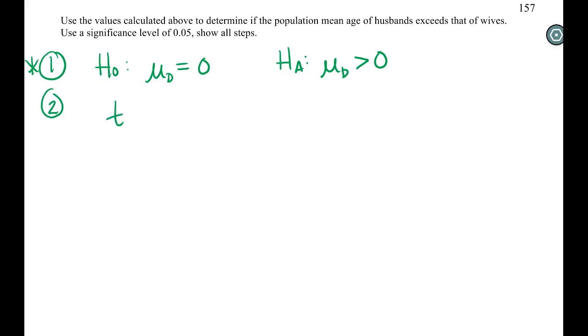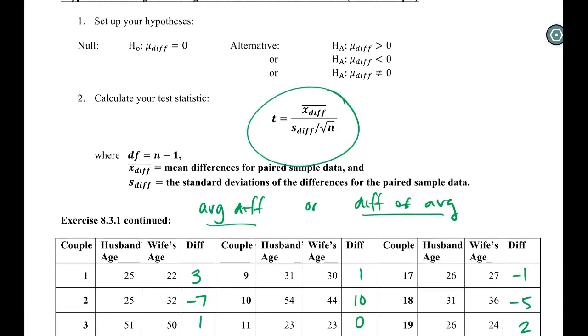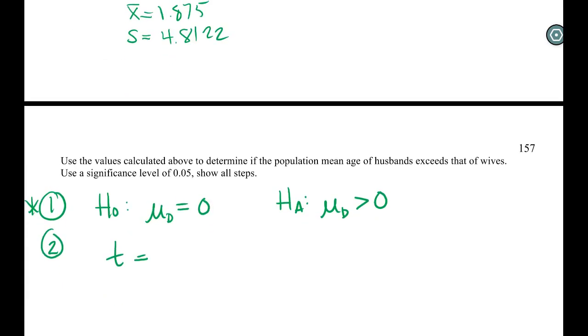So step two would be to go ahead and get our test statistic, which is still a T, because we don't have the true standard deviation difference between the two. We need to get a T. If we wanted to, we could use the actual formula here, our average difference. Notice that there's nothing subtracted here because we're assuming that the real average difference is zero, so we don't need to even write that there. It's just going to be this divided by our s divided by the square of n. So technically, this would be easy to calculate. This would be 1.875 divided by our s over the square root of n, which was 24.